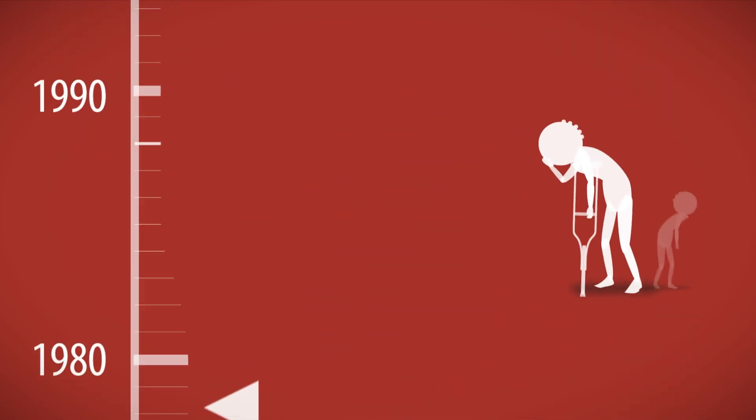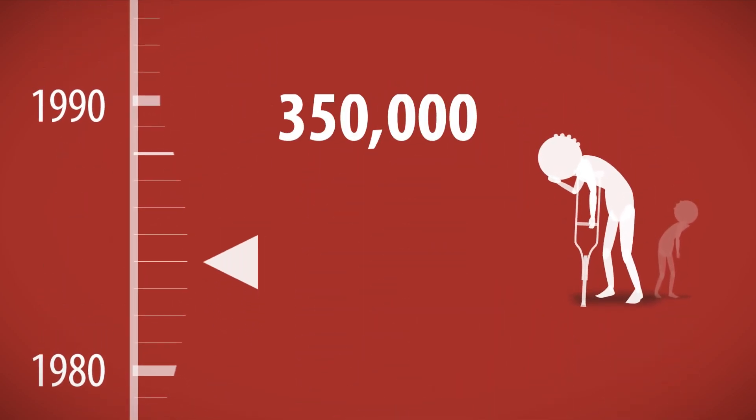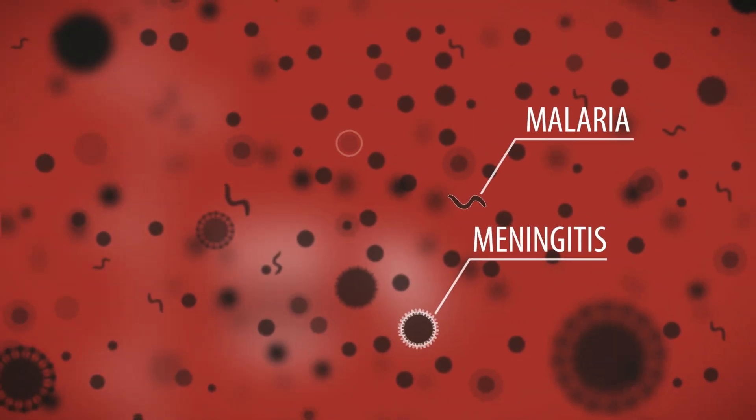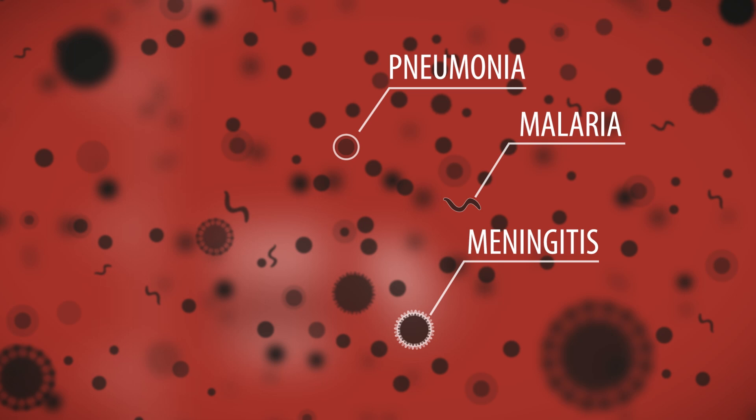As recently as 1988, there were 350,000 children paralyzed by polio. Malaria, meningitis or pneumonia meant death for millions of people living in the poorest countries.